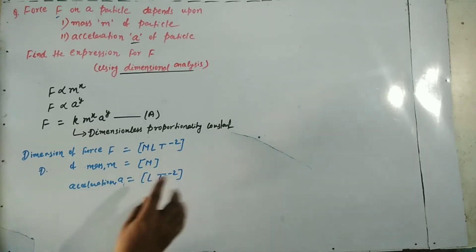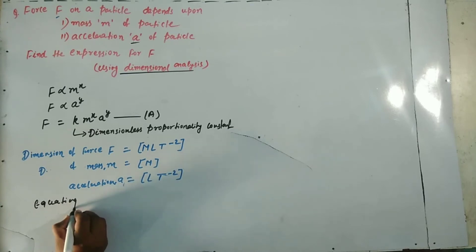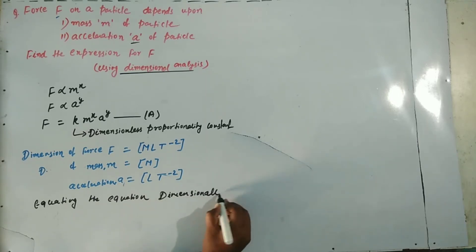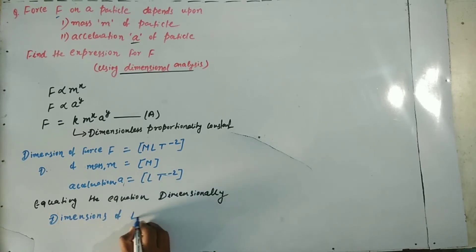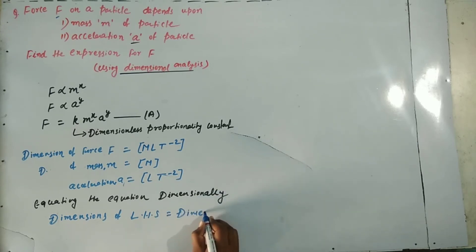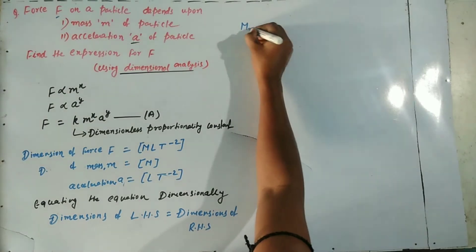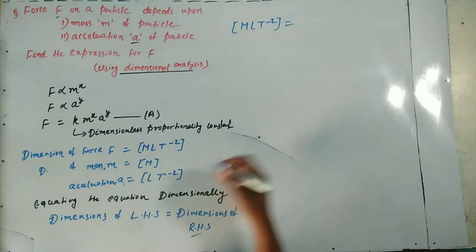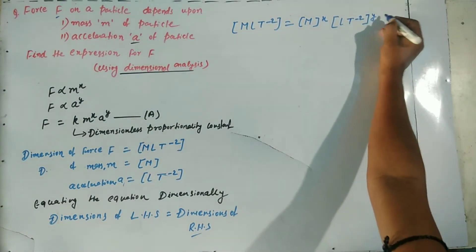Now we equate equation A dimensionally. According to the principle of homogeneity, the dimension of the LHS must equal the dimension of the RHS. Substituting both sides: MLT to the power minus 2 equals M to the power X times LT to the power minus 2 to the power Y.